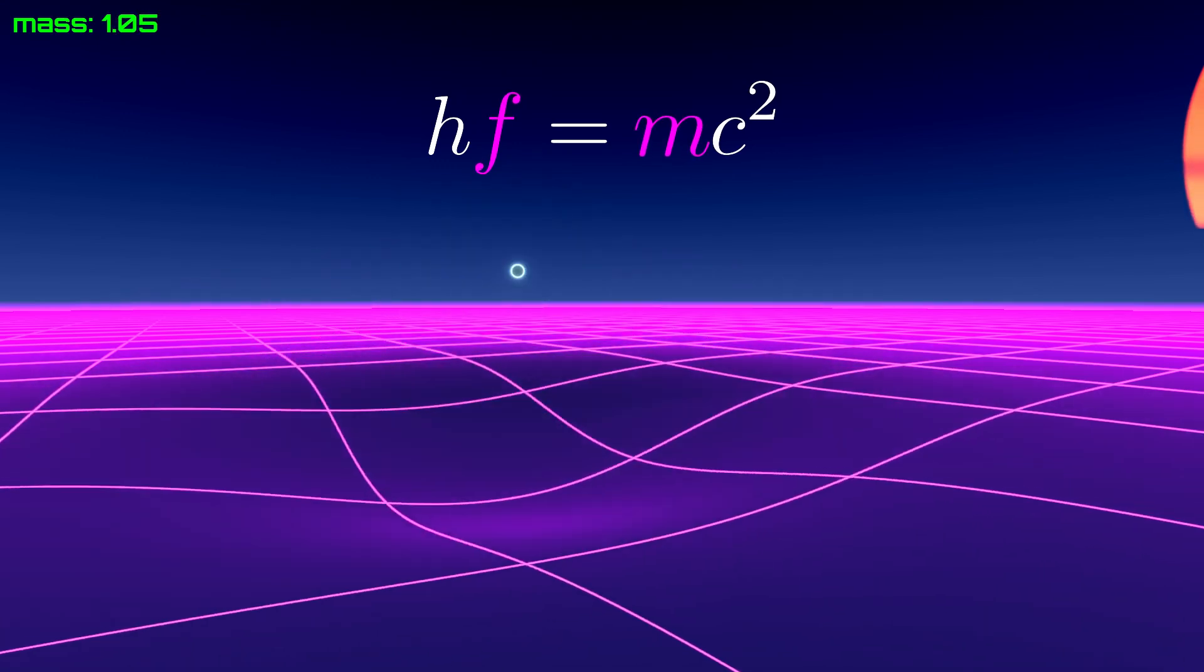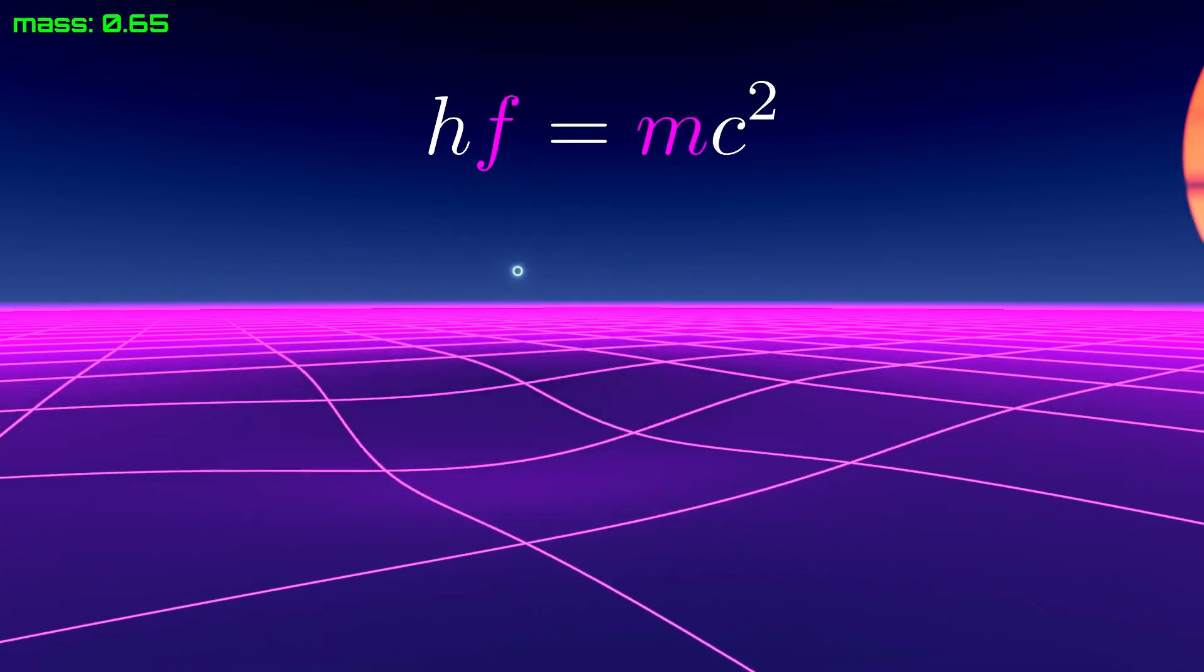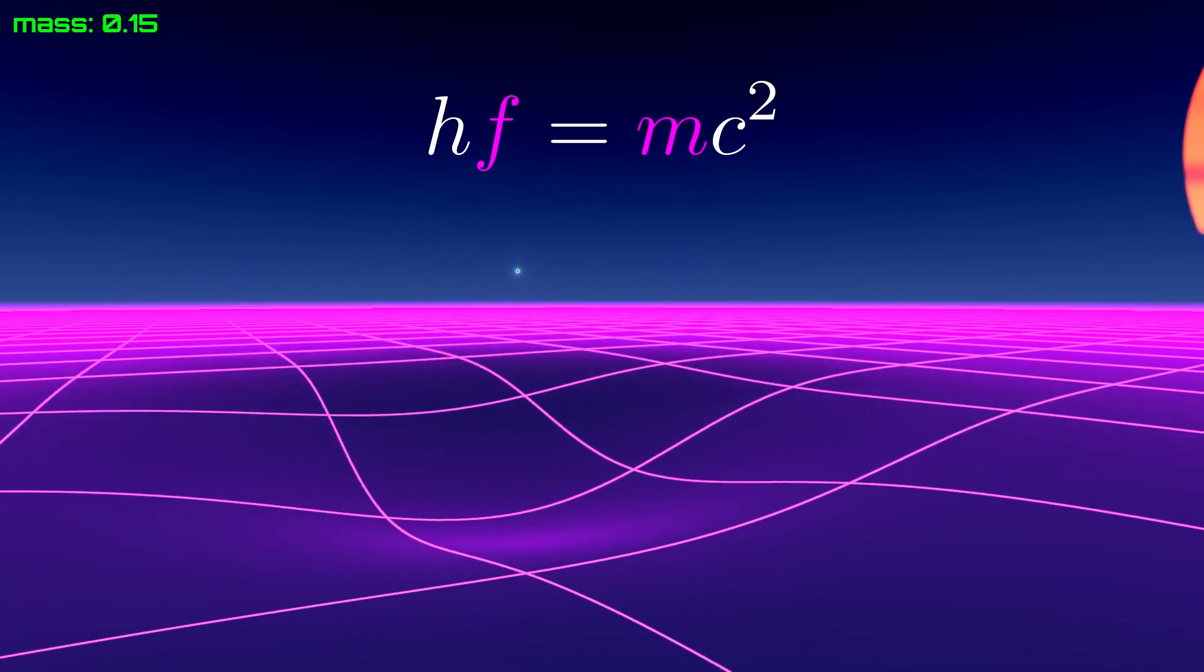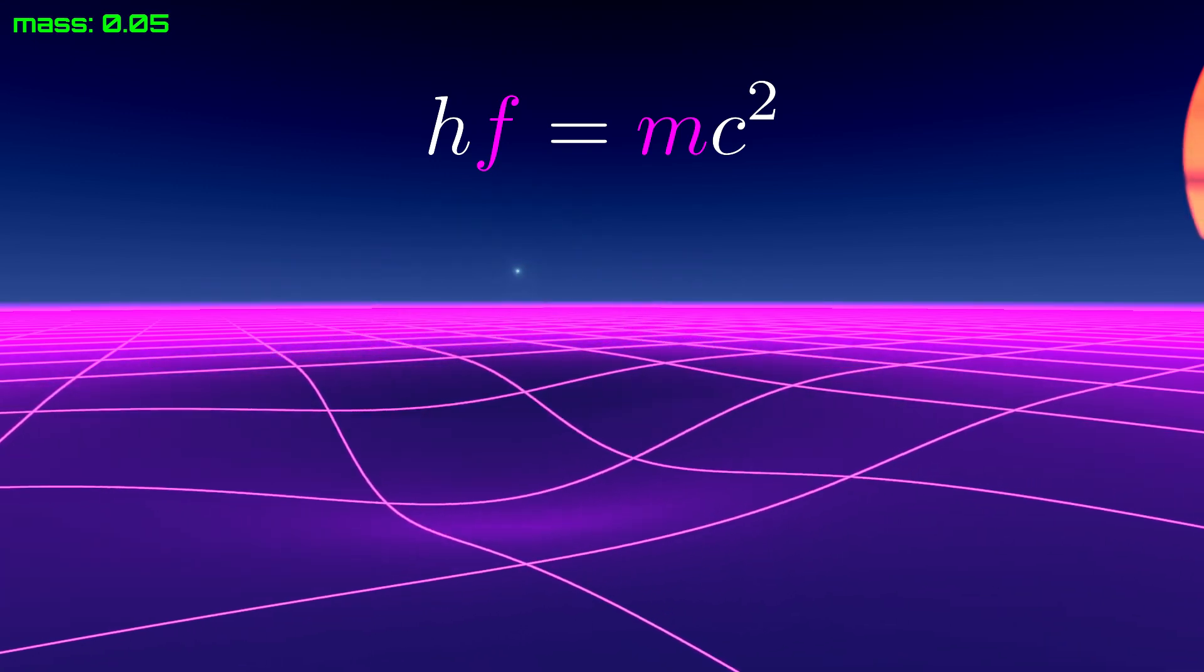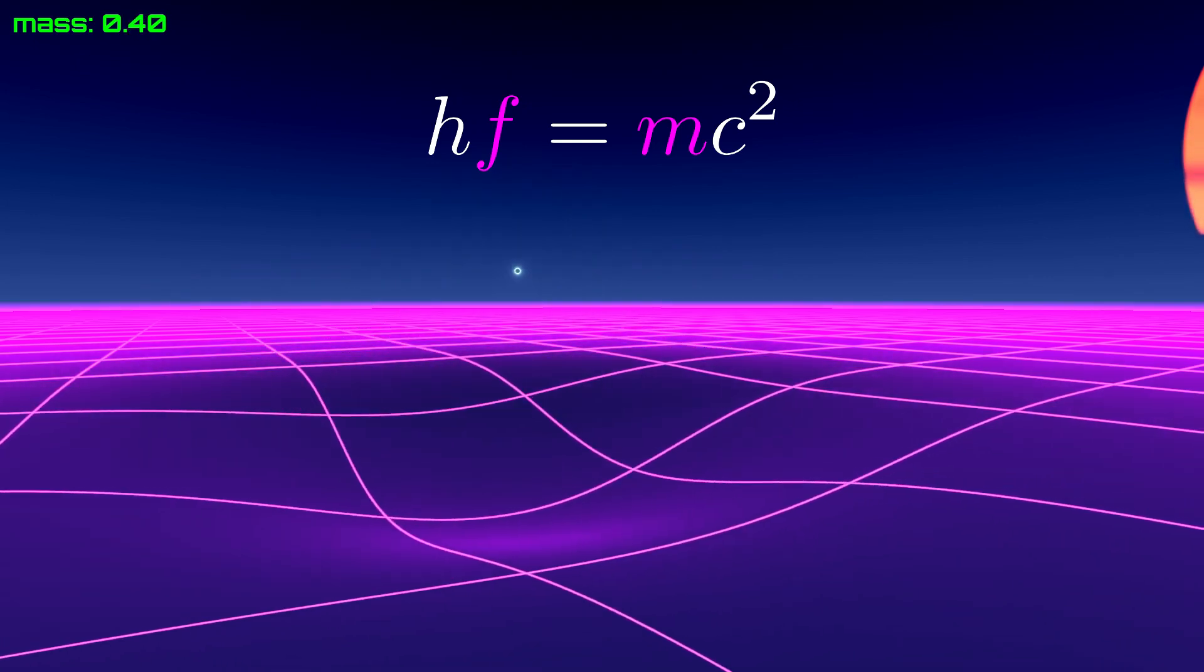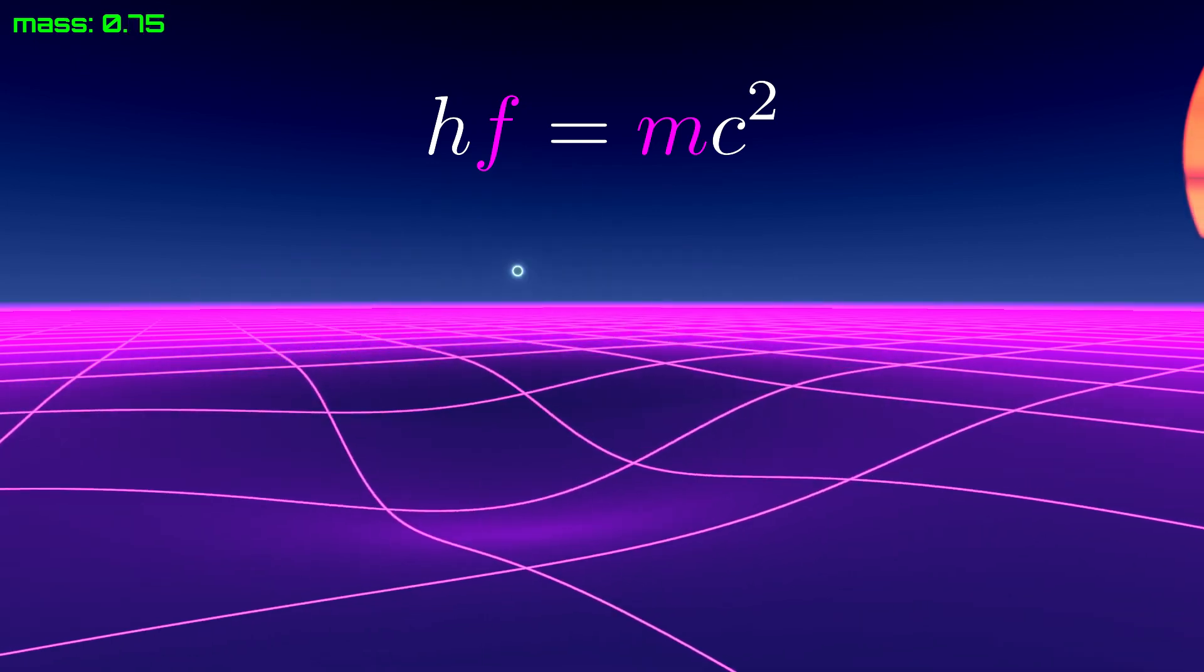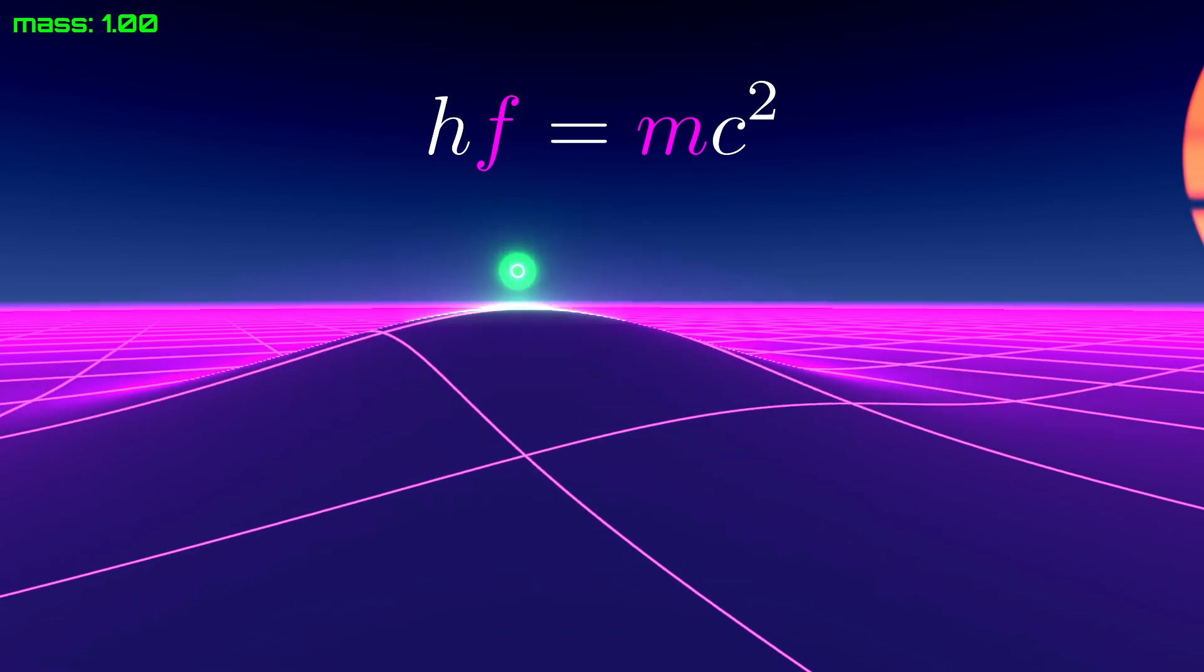Alright, so let's put these together to obtain the key formula, which tells us that the frequency of a particle is proportional to its mass. The proportionality constants include Planck's constant from quantum mechanics and the speed of light from the theory of relativity.